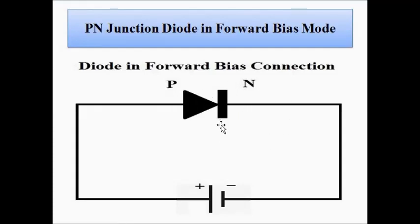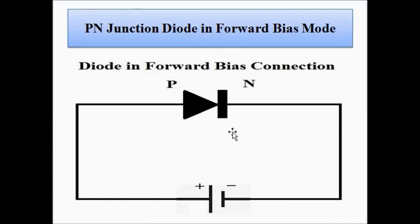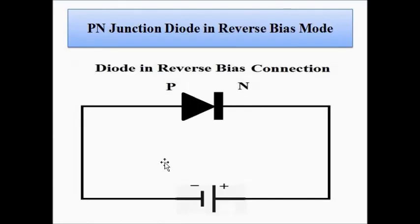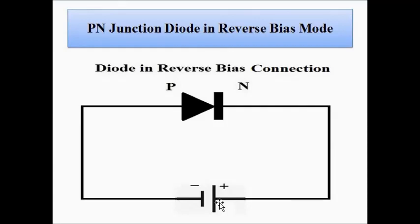You can check out the video on forward and reverse biasing of diodes in my introductory PN junction diode series. In forward bias, the P-type end is connected to the positive terminal and the N-type end to the negative — the voltage across the diode is greater than 0.7 V. In reverse bias it is the opposite. In real numerical problems you will rarely see simple circuits; normally there are multiple diodes, voltage sources, and resistances.